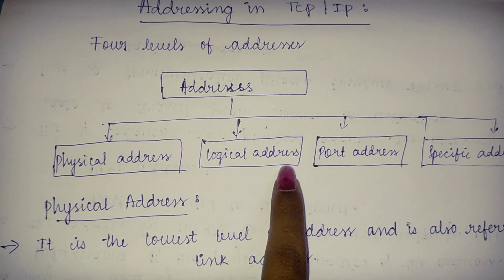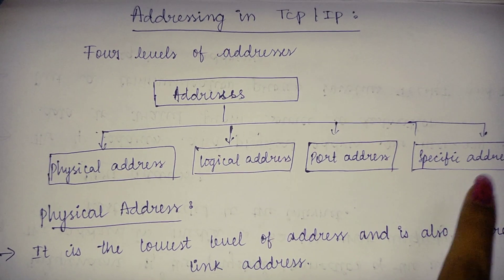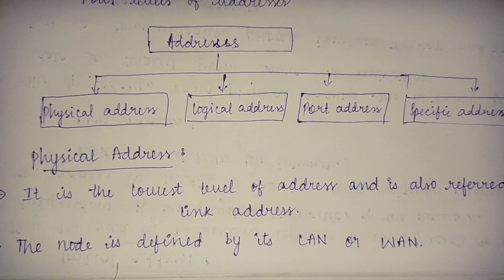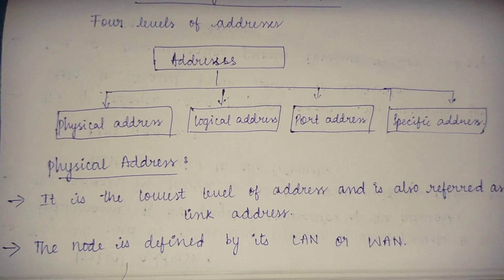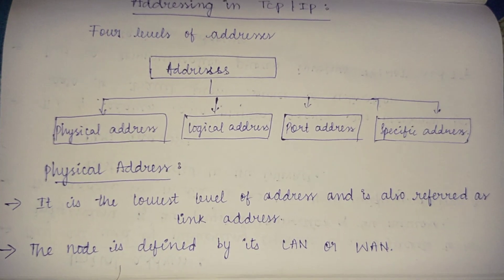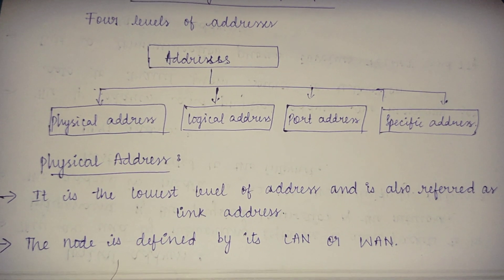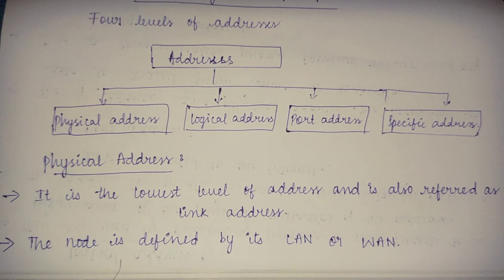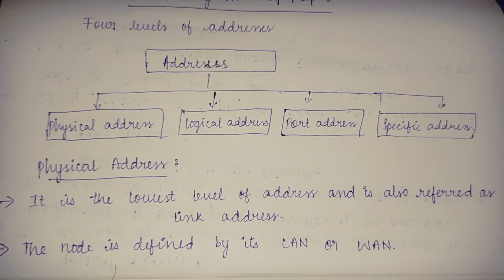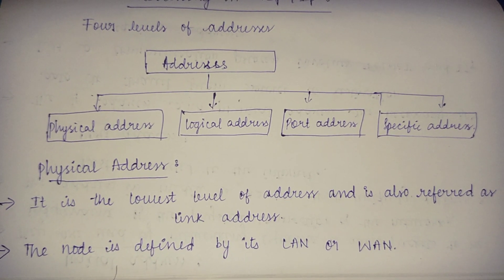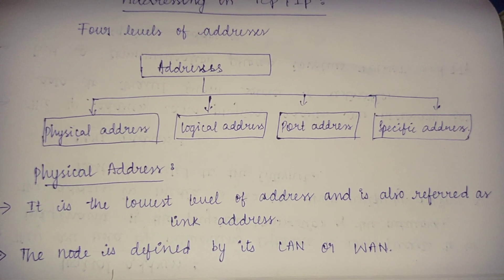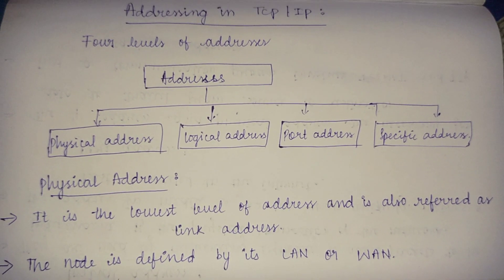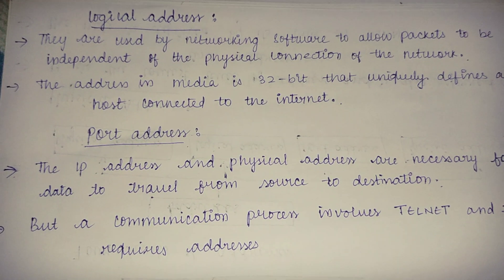The physical address is the lowest level of address and is also referred to as a link address. The node is defined by its LAN or WAN.